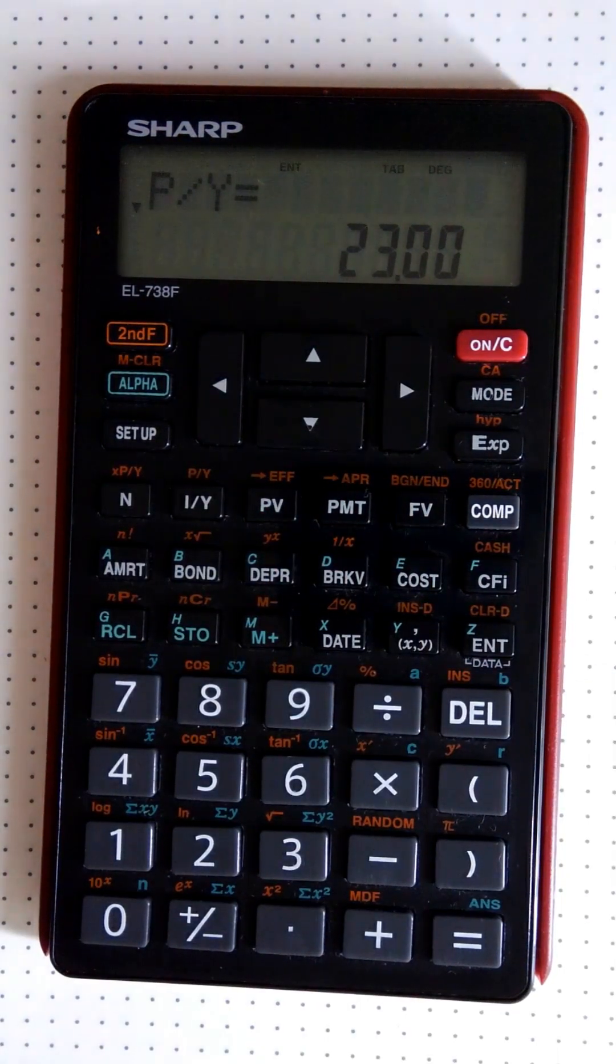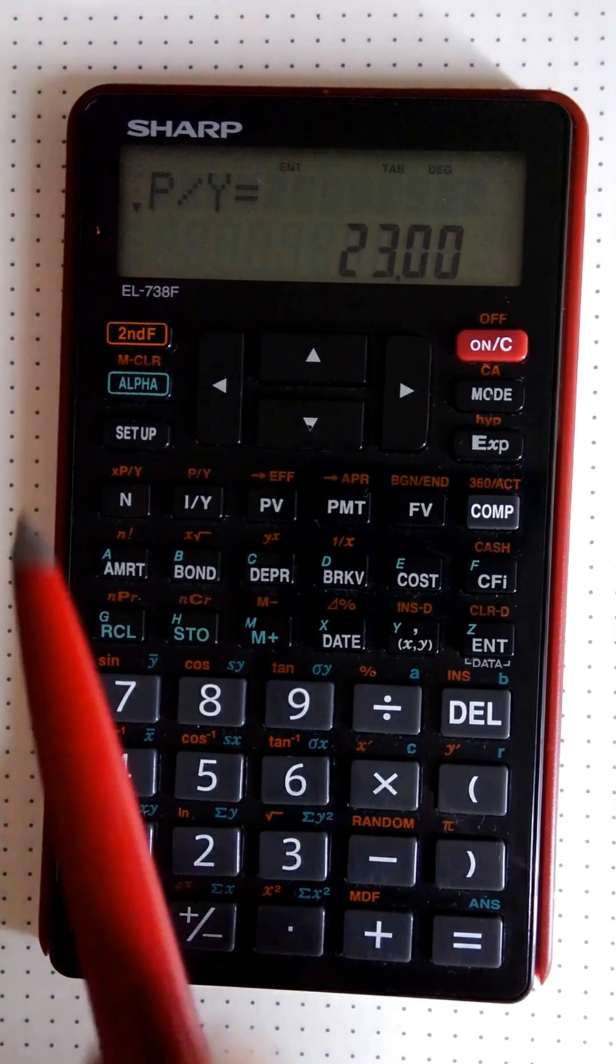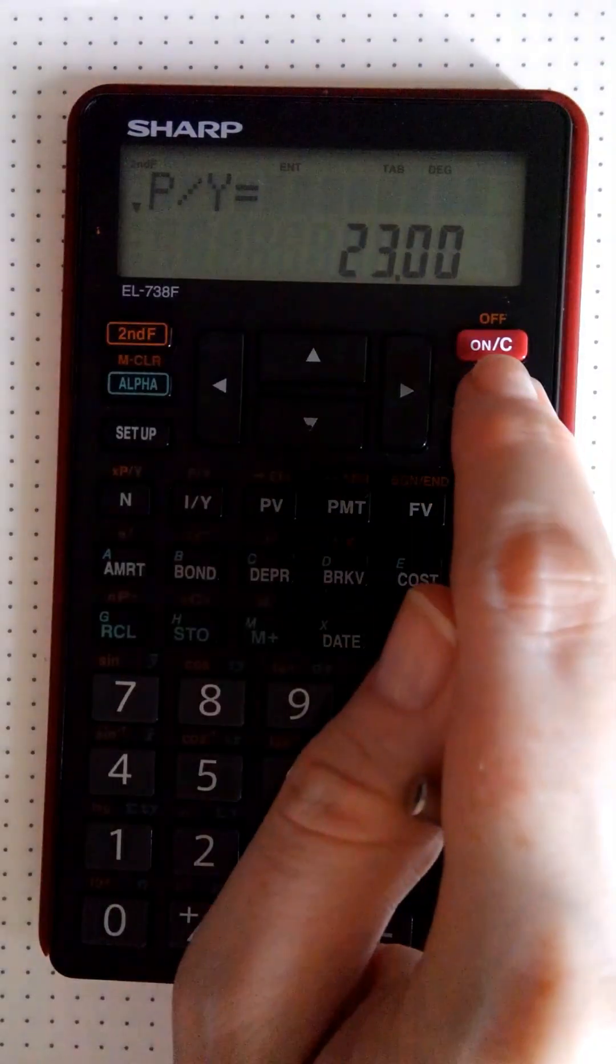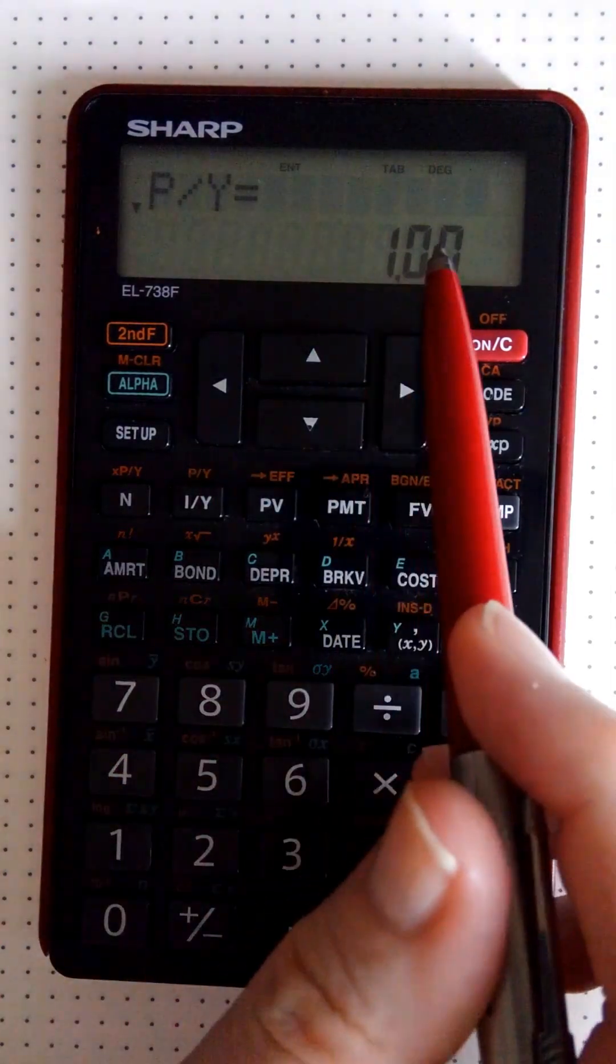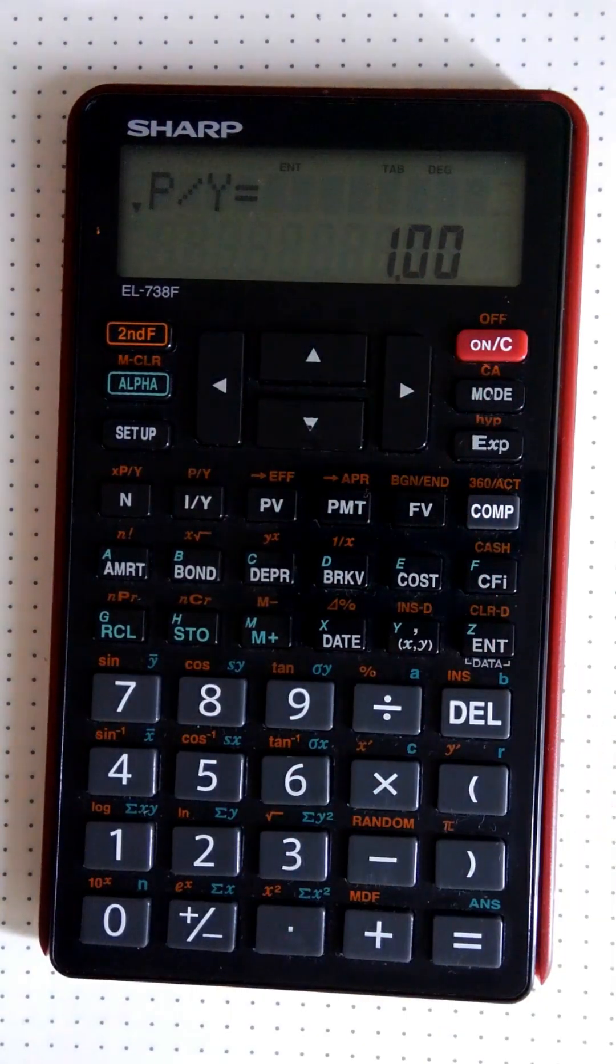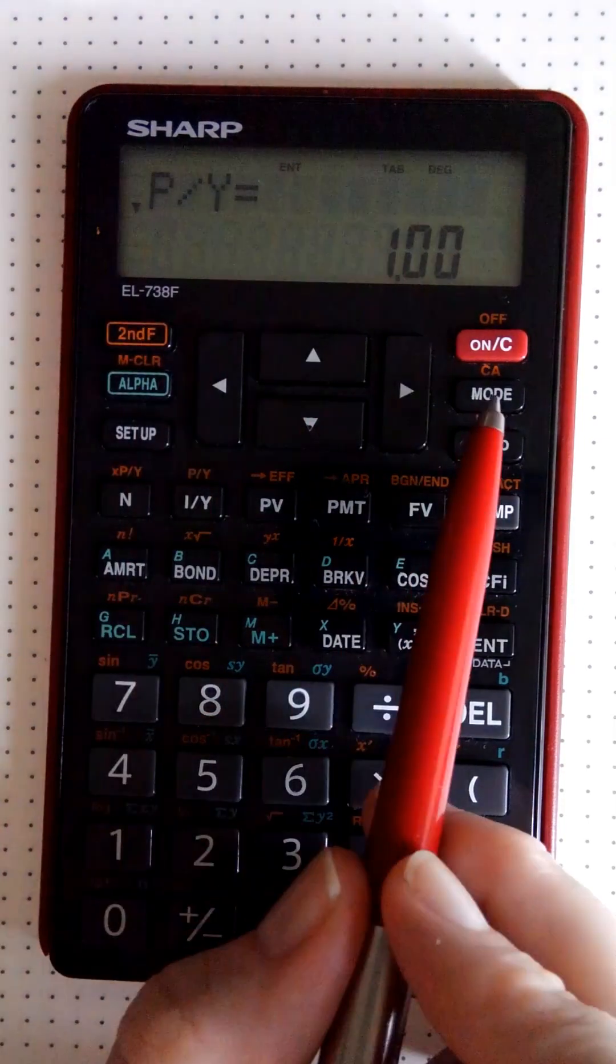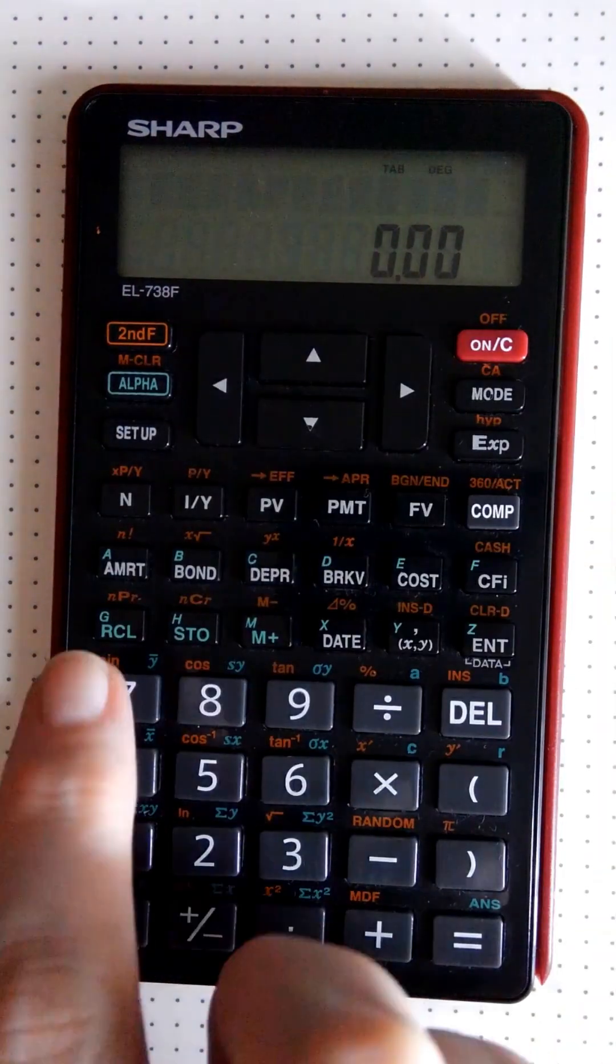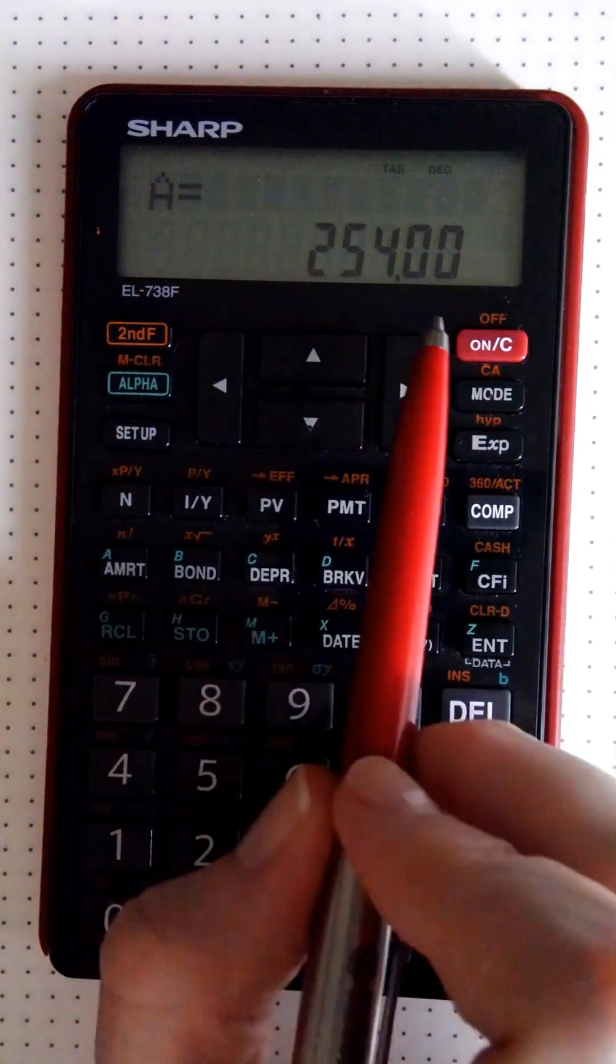Now we need to look at how do we get it to go away. How do we get it to go away is basically we use the second function and the CA button. So second function CA, and now it goes back to default. So if you want to clear the PVs and the FVs, etc., we'll use second function and CA. But if we clear the screen and say recall A, you see that A is still there.